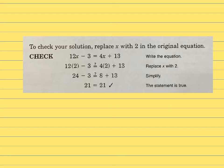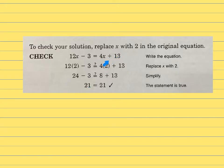Now I'll verify by substituting x equals 2 back into the original equation. On the left side: 12 times 2 is 24, minus 3 equals 21. On the right side: 4 times 2 is 8, plus 13 equals 21. Both sides equal the same number, so check — I did get the right answer for x.